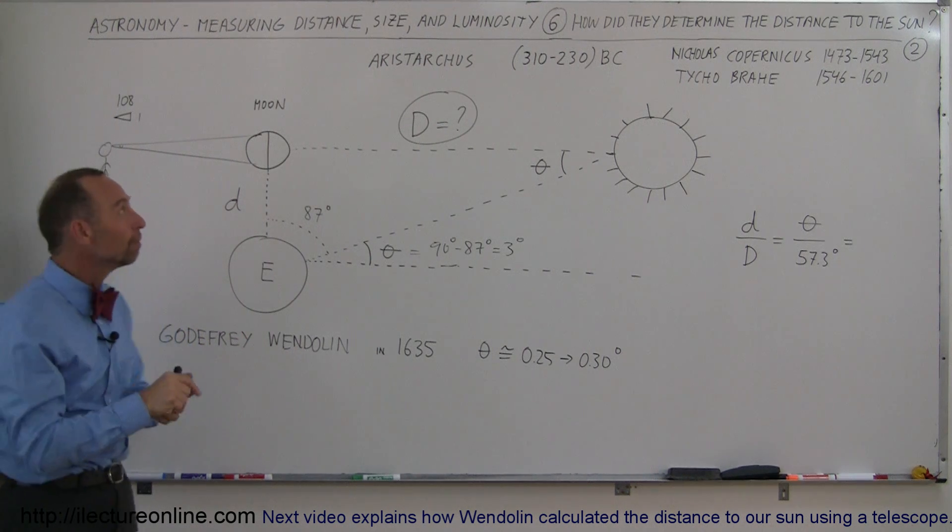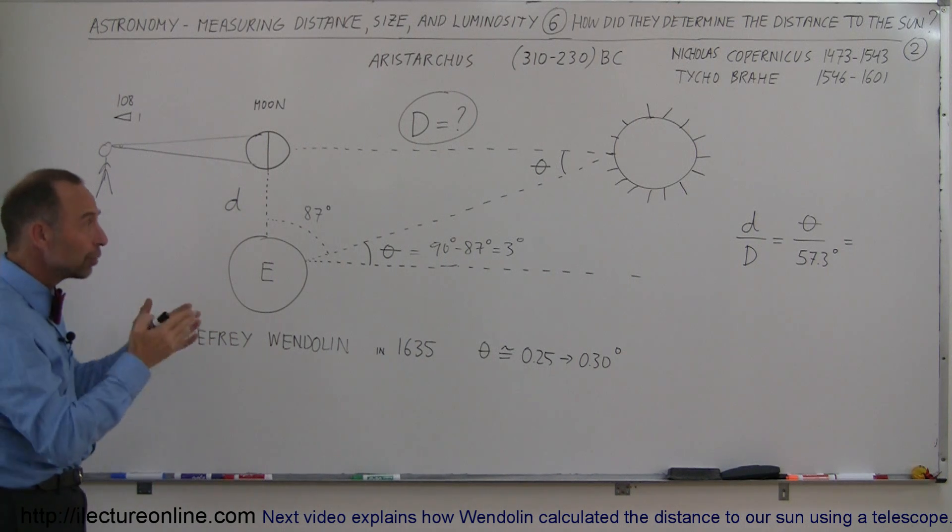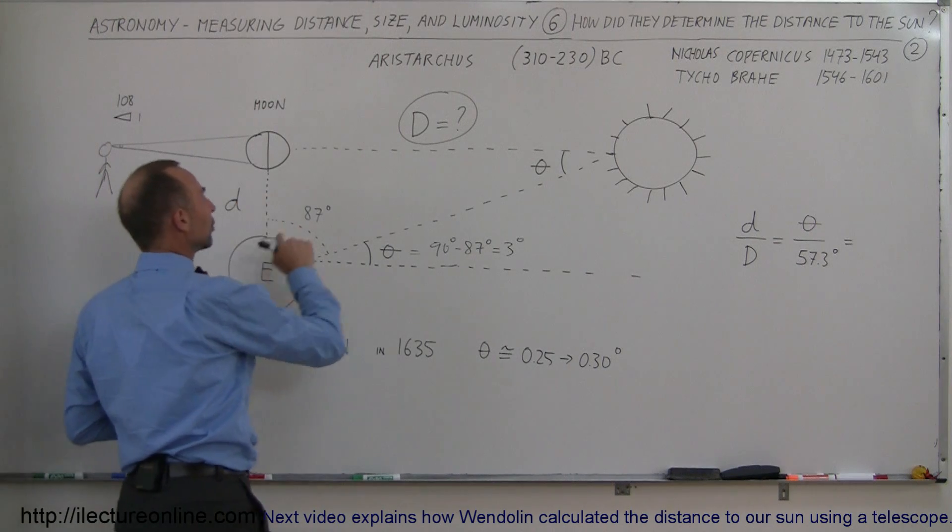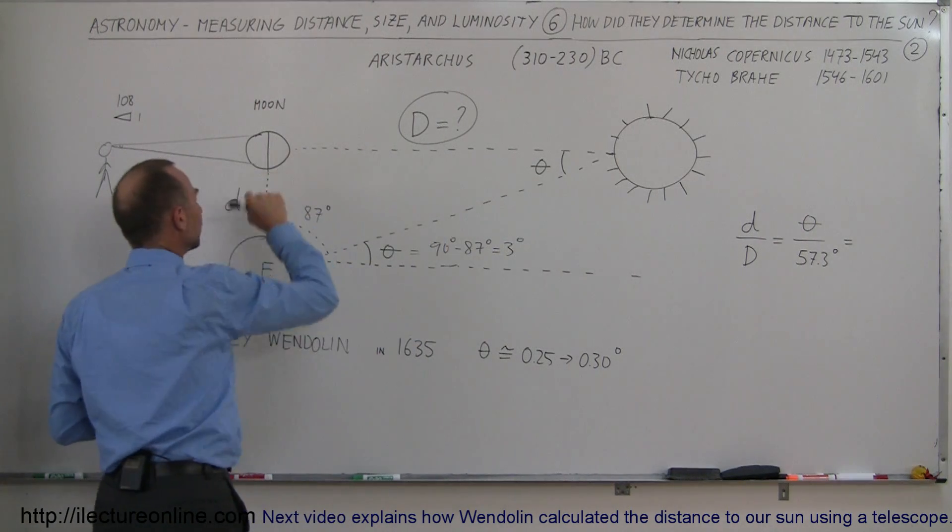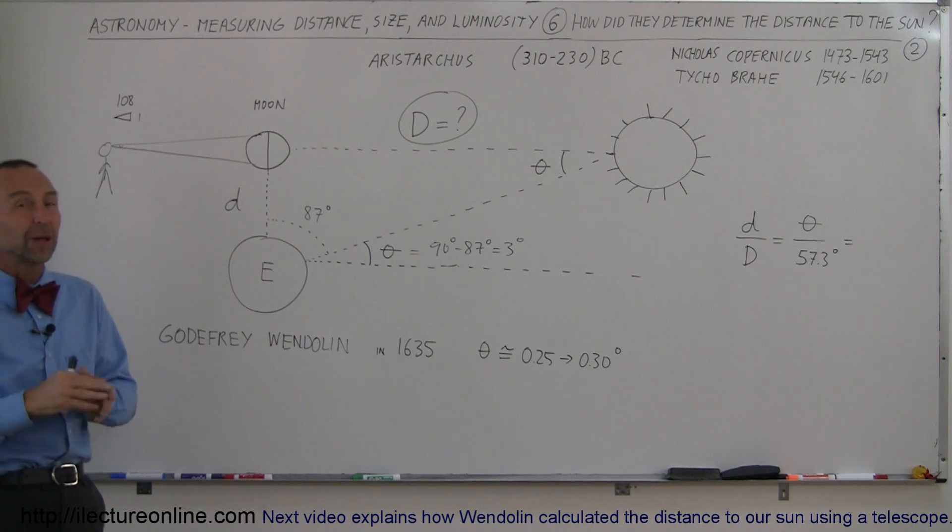Remember, more than 2,000 years ago, Aristarchus figured out that it was about 20 times the distance from the Earth to the sun as it was from the Earth to the moon. And of course, that put the sun at about four and a half to five million miles, which is about one twentieth of what it really was.